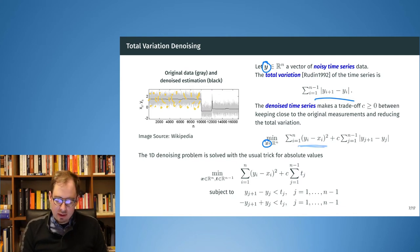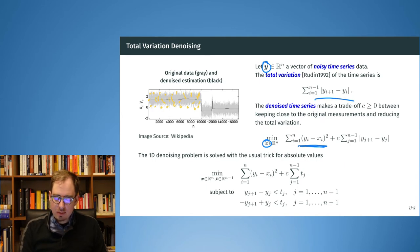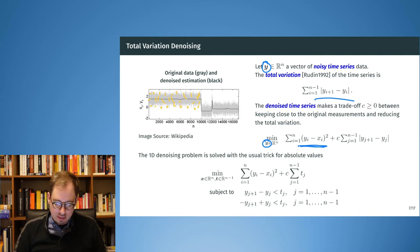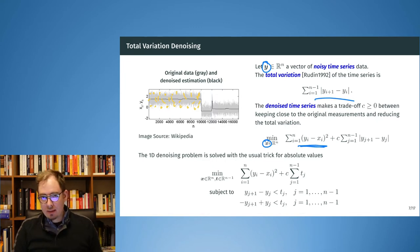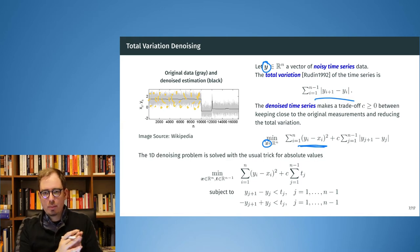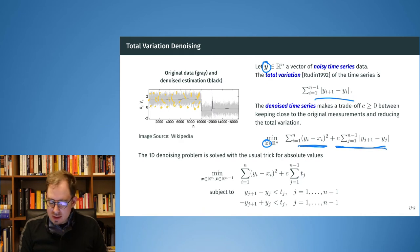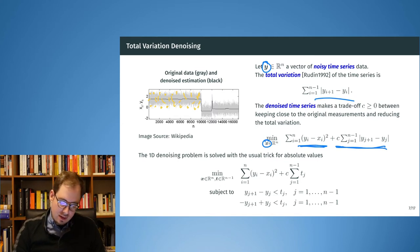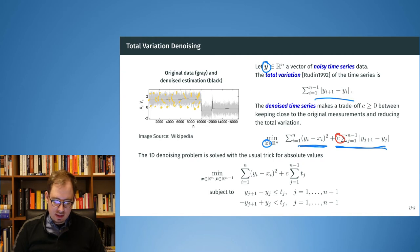We want X to be close to Y, so we look at the squared distance between the original and denoised measurement. In addition, we add the total variation term. We want the recovered denoised time series to be close to the original, and also not to be noisy. The not-being-noisy part is captured by the second term, which looks at the absolute distances between data points and their neighbors.